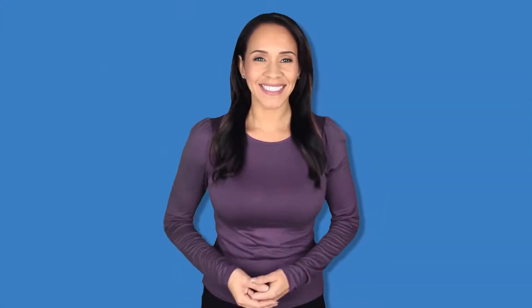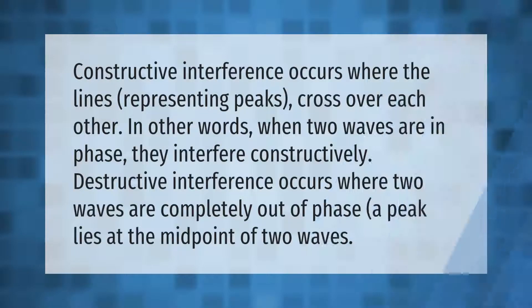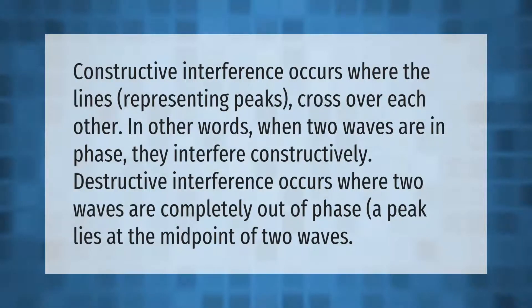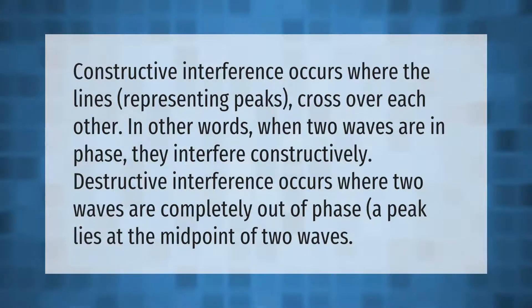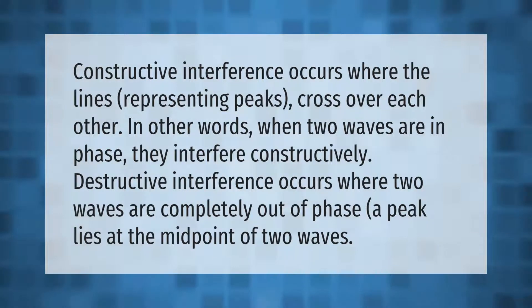Constructive interference occurs where the lines representing peaks cross over each other. In other words, when two waves are in phase, they interfere constructively.